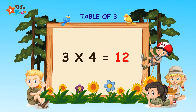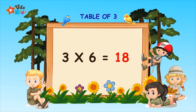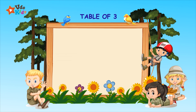Three fours are twelve. Three fives are fifteen. Three sixes are eighteen. Three sevens are twenty-one. Three eights are twenty-four. Three nines are twenty-seven. Three tens are thirty.